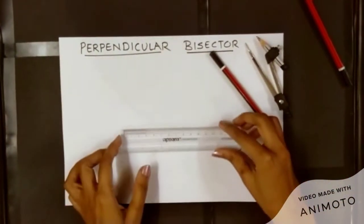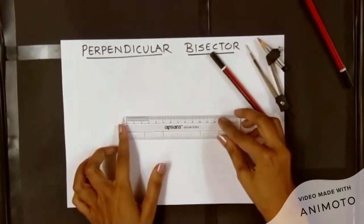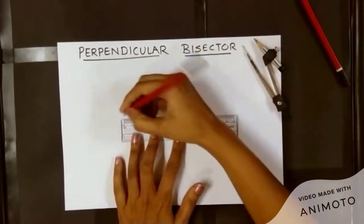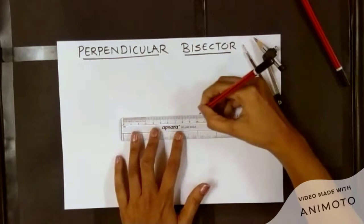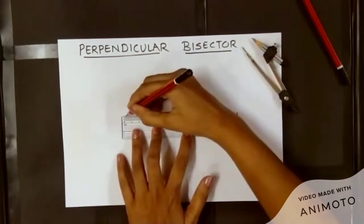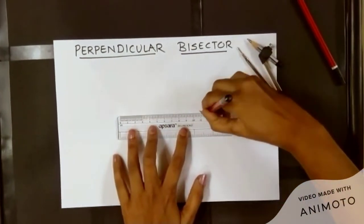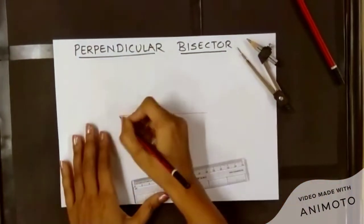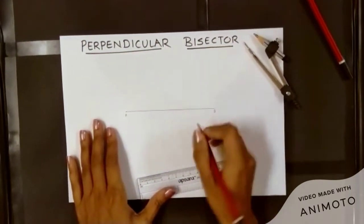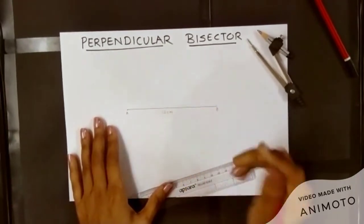The first thing that we have to do is draw a line segment of the desired length. So here I'm drawing a line segment of 12 cm. I will mark the two end points as A and B, and I will write the measurement as 12 cm.